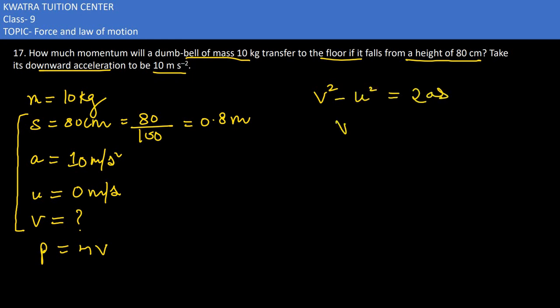We need to find v. u is 0, then 2 is there, where a is 10 and s is 0.8. Remove the decimal from 0.8, so you have 2 times 10 times 0.8 which is 16.